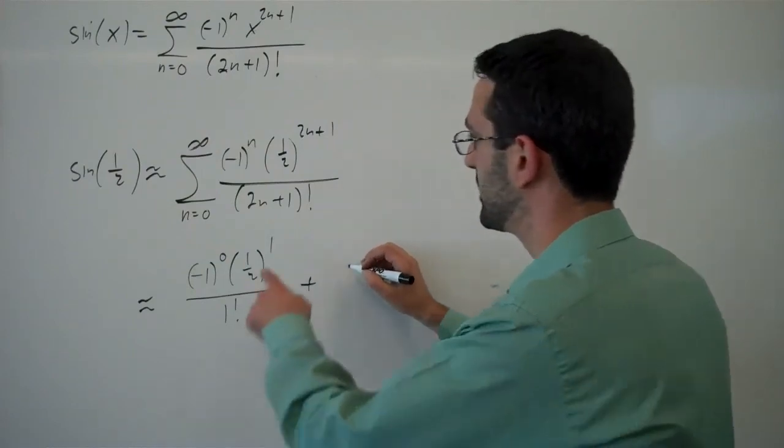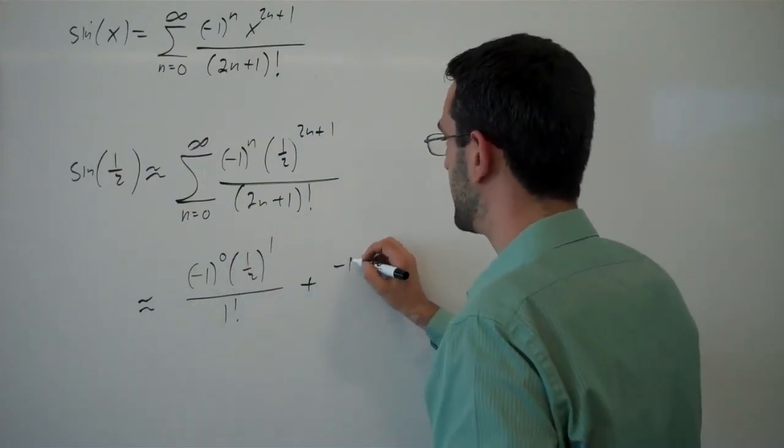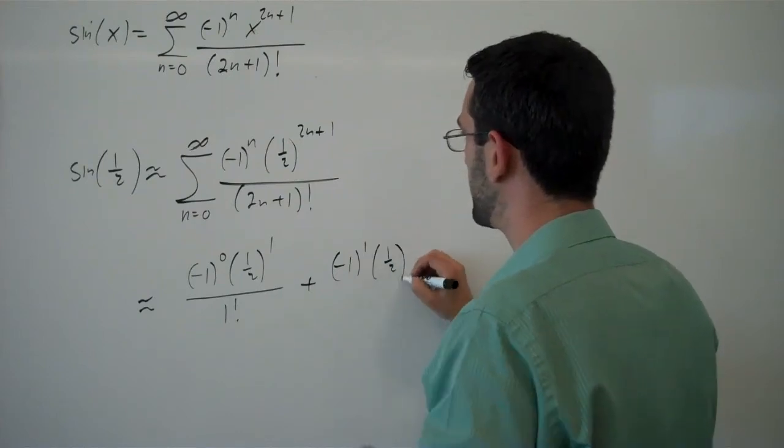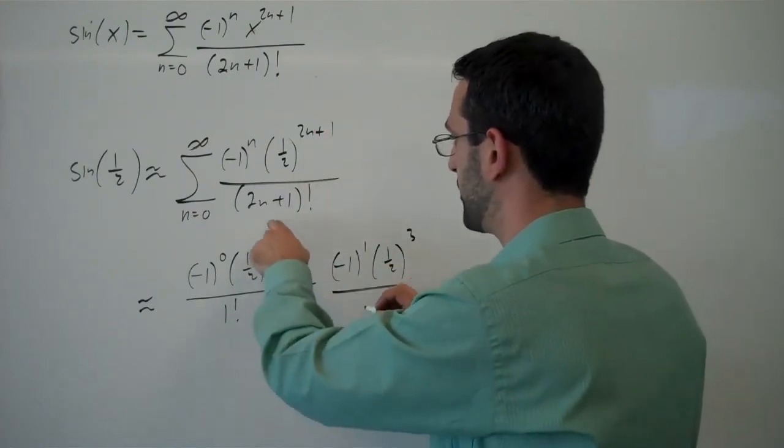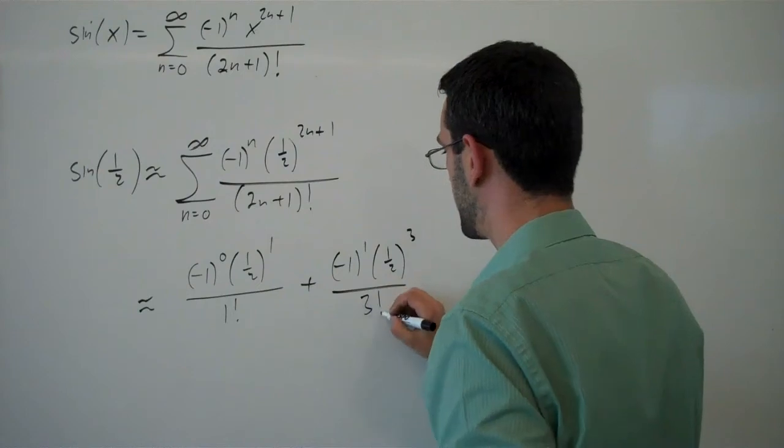Plus, now plugging in 1 for n, negative 1 to the 1, one half to the 3rd over, plugging in 1, 3 factorial.